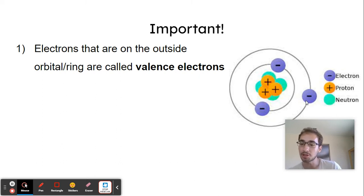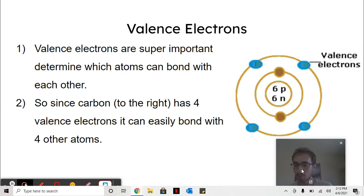So this is lithium. Lithium only has one valence electron. Here is a model of carbon. Carbon has six electrons, but it only has four valence electrons because it has four electrons on the outside ring. The reason why valence electrons are super important is because it determines which atoms can bond with each other. For example, carbon has four valence electrons, so it can easily bond with four other atoms because those electrons can be bonded in covalent bonds with other things. That'll be for a different time, though. So that is carbon. Carbon has four valence electrons.